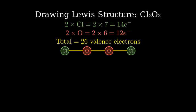Next, let's add the lone pairs to complete the octets. Each chlorine atom gets 3 lone pairs, and each oxygen atom gets 2 lone pairs.